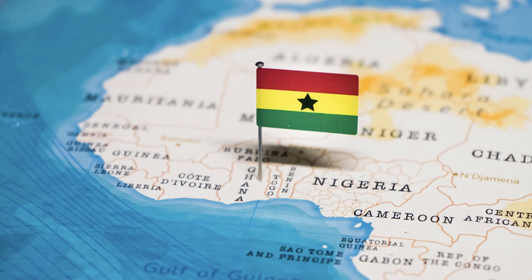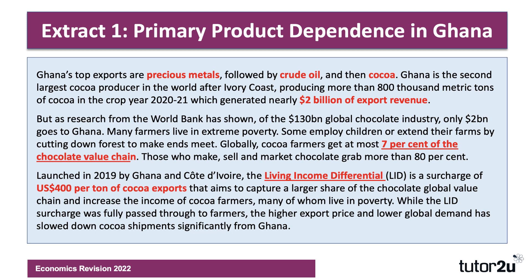Let's take a look at the evidence — the extracts and background on the West African country of Ghana, which is a neighbour of the Ivory Coast, two of the world's biggest cocoa producers. The first extract is about primary product dependence in Ghana. Ghana's top exports are precious metals, followed by crude oil, then cocoa. Ghana is the second largest cocoa producer in the world after the Ivory Coast. They produce over 800,000 metric tons a year, generating $2 billion of export revenue. But the global chocolate industry is worth $130 billion or more each year. Many smallholder farms in Ghana and the Ivory Coast are essentially living in extreme poverty, with cocoa farmers receiving less than 10% — estimated at 7% — of the global chocolate value chain.